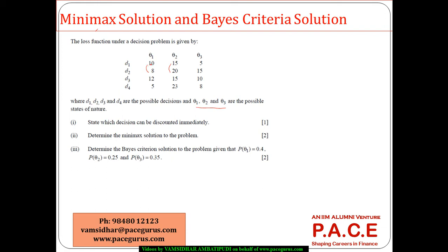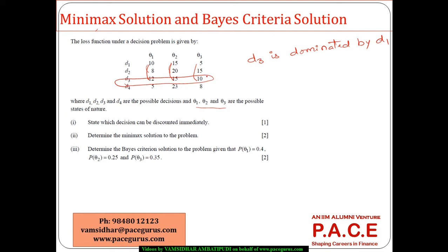What about D1 and D3? D1 is less than or equal to D3 across all states, which means D3 is dominated by D1. So D3 can very well be eliminated. I am going only with D1, D2, D4 now.